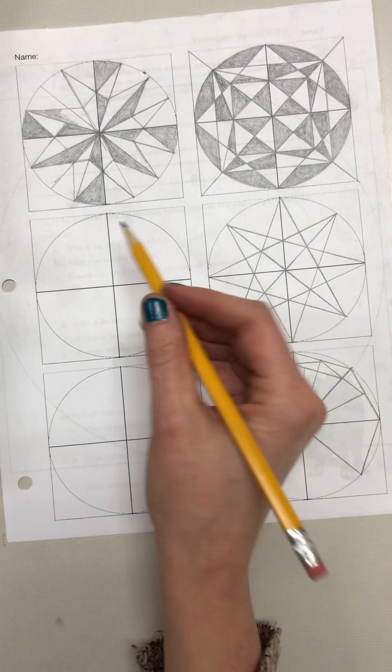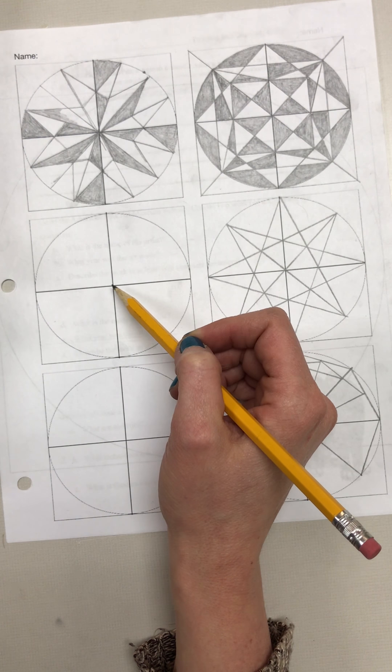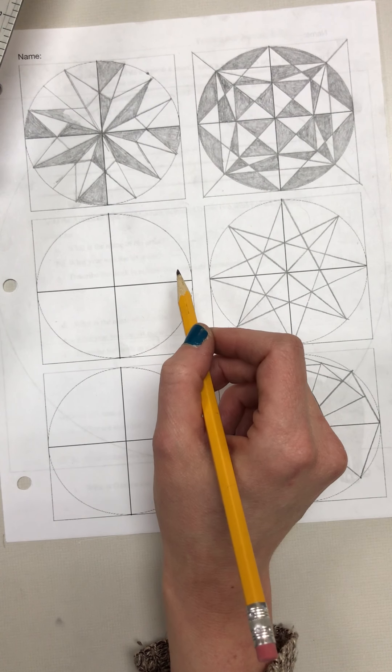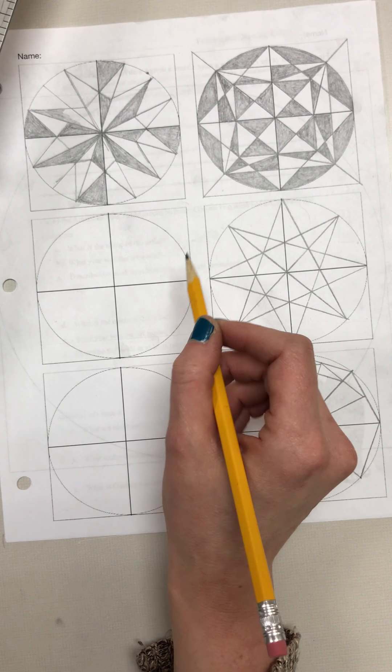When you find the center of the circle on your final, that'll be a little more tricky. But right now I've got you started with a horizontal and vertical line. You can also use these corners of the square.